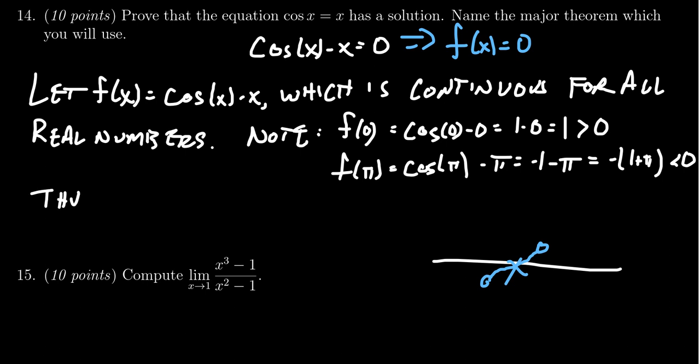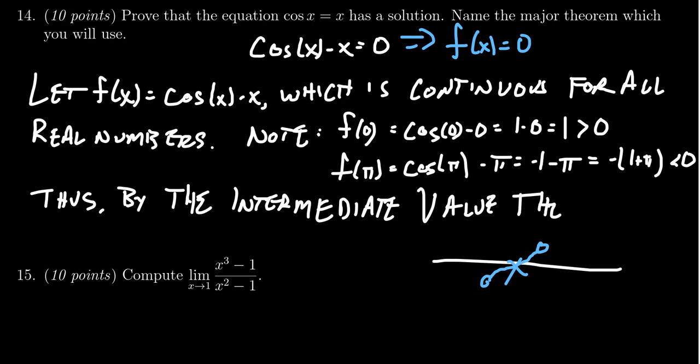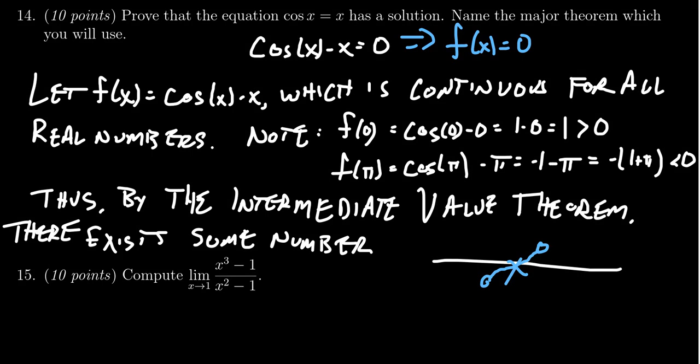by the intermediate value theorem, there exists some number, some number. And what can we say about it? We can call that number c, right?